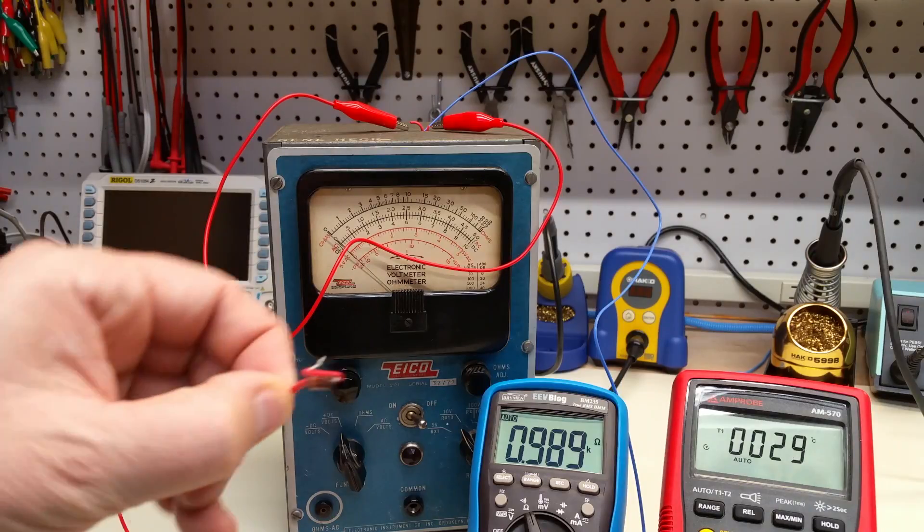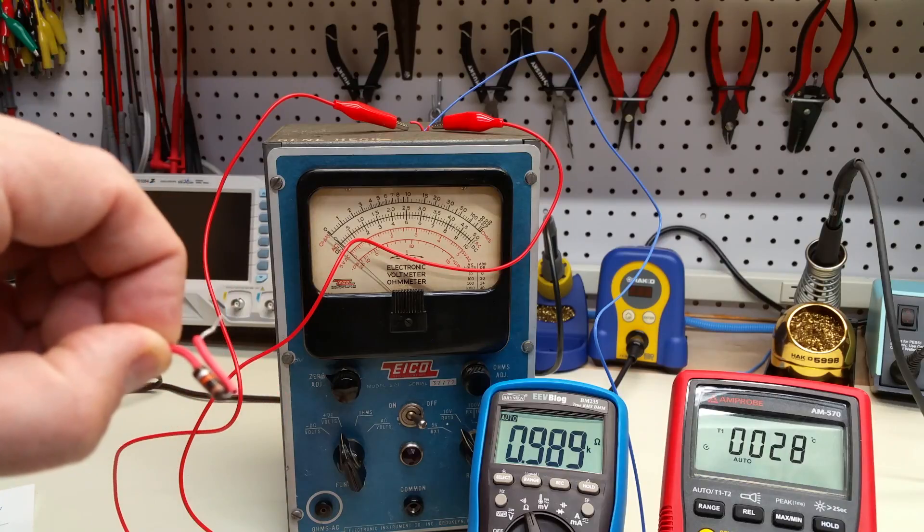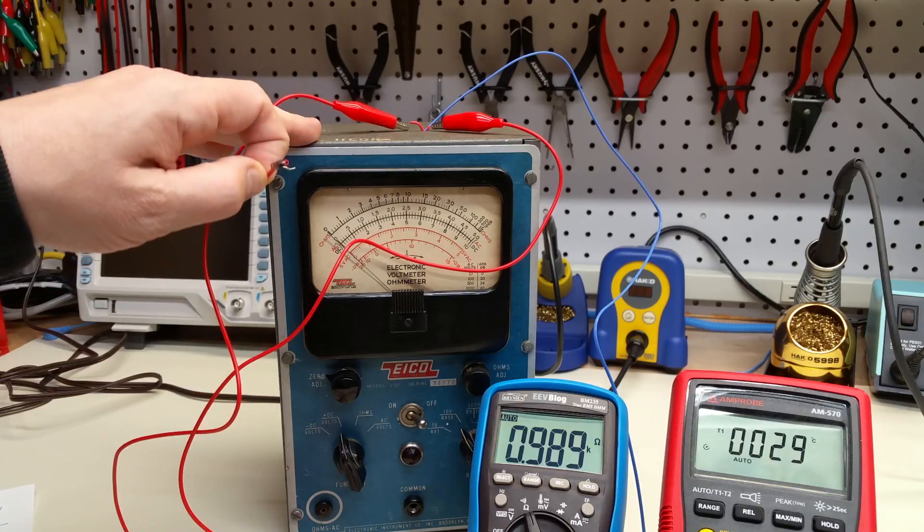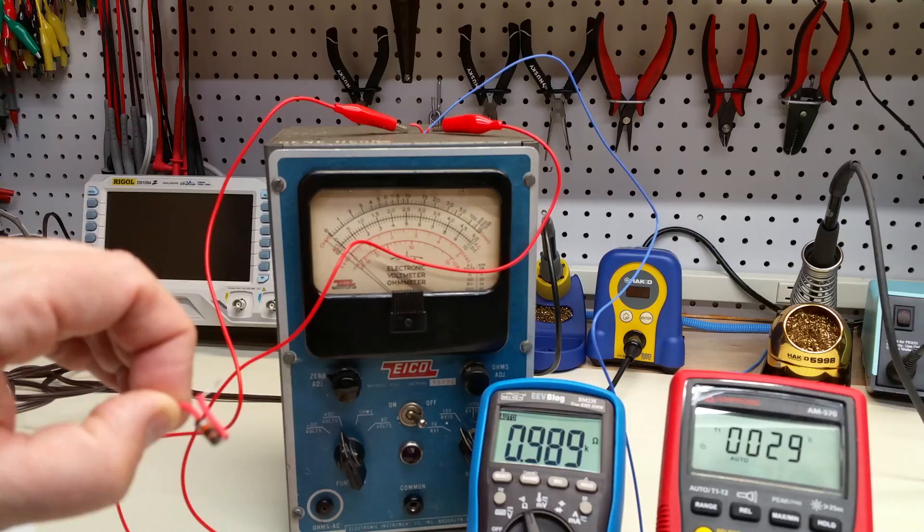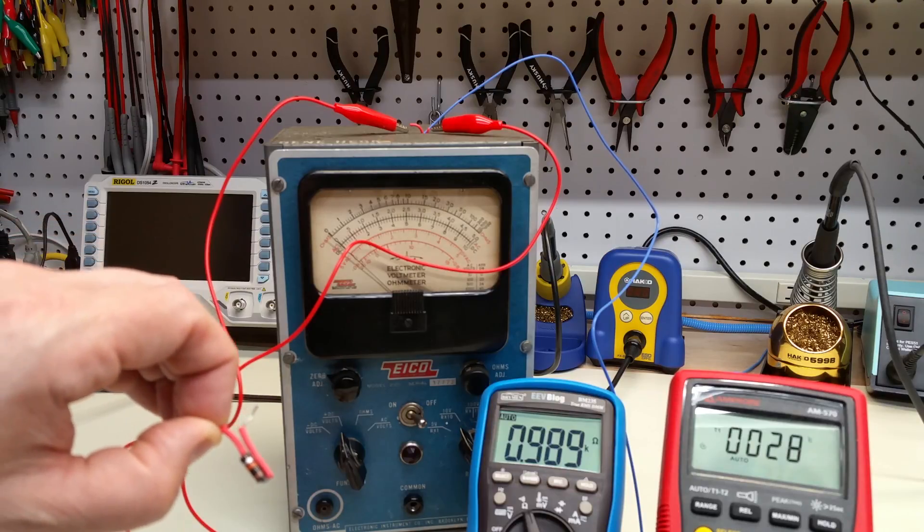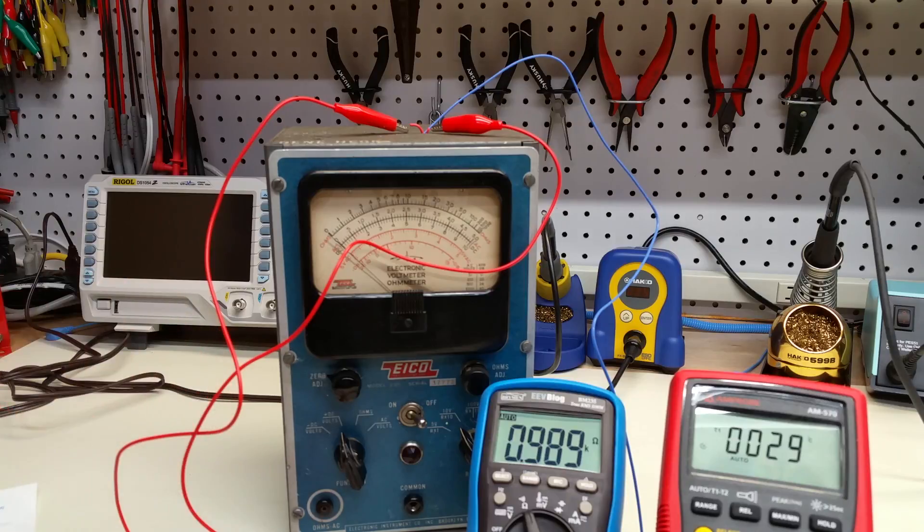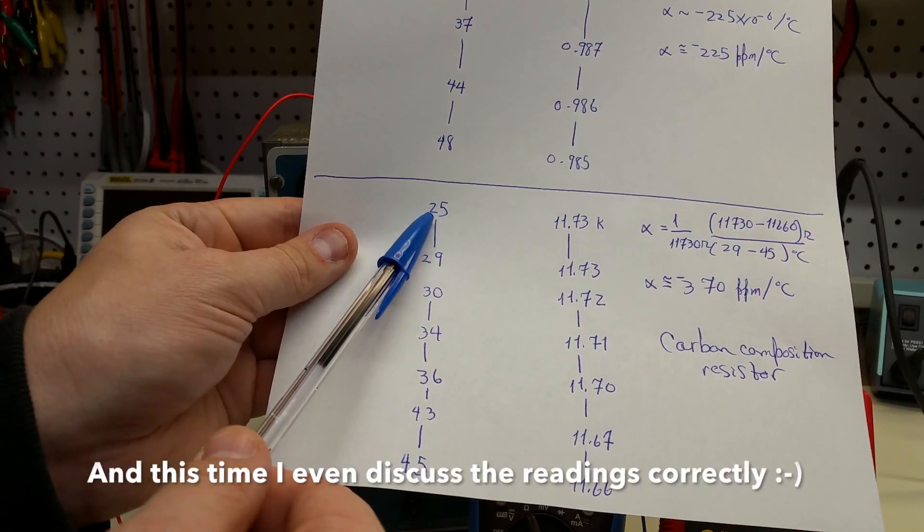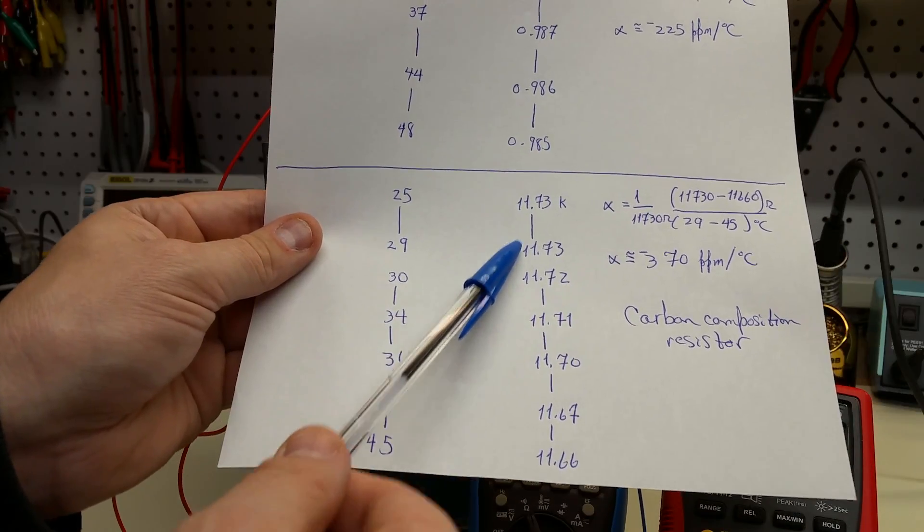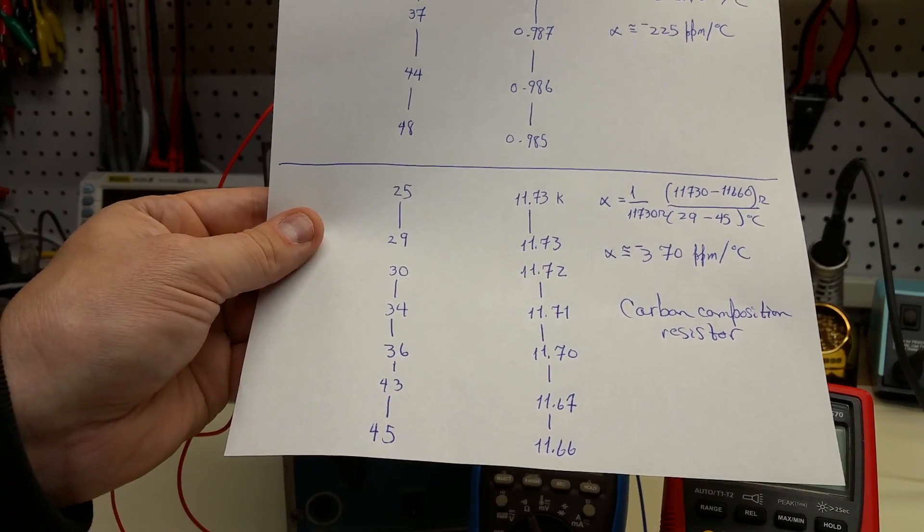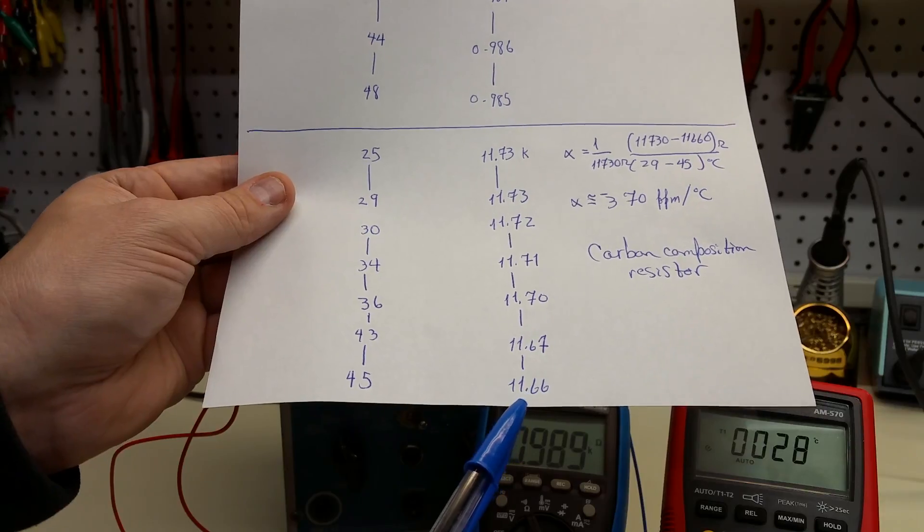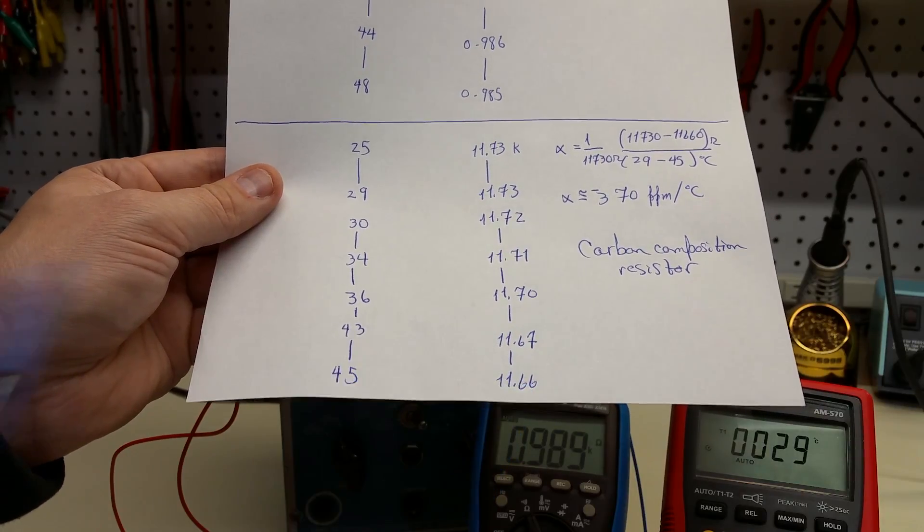I also did this with an older carbon composition resistor. This one right here, which I actually ended up cutting out of this. So this had drifted a bit, and I wanted to see if the carbon composition makeup had a significantly different alpha. So I did exactly the same thing. And this is the data that I got. So between 25 and 29 degrees C, it didn't change at all. It was 11.73 kiloohms. But then it started changing and I stopped taking data at 45 degrees C, at which point the resistance was 11.66 kiloohms.